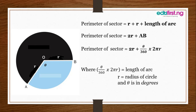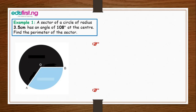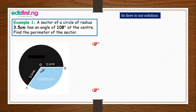Let's get straight to an example to push home our points. A sector of a circle of radius 3.5 cm has an angle of 108 degrees at the center. Find the perimeter of the sector. We have the diagram below, and the parameters given are 3.5 cm for the radius and 108 degrees for the angle at the center.